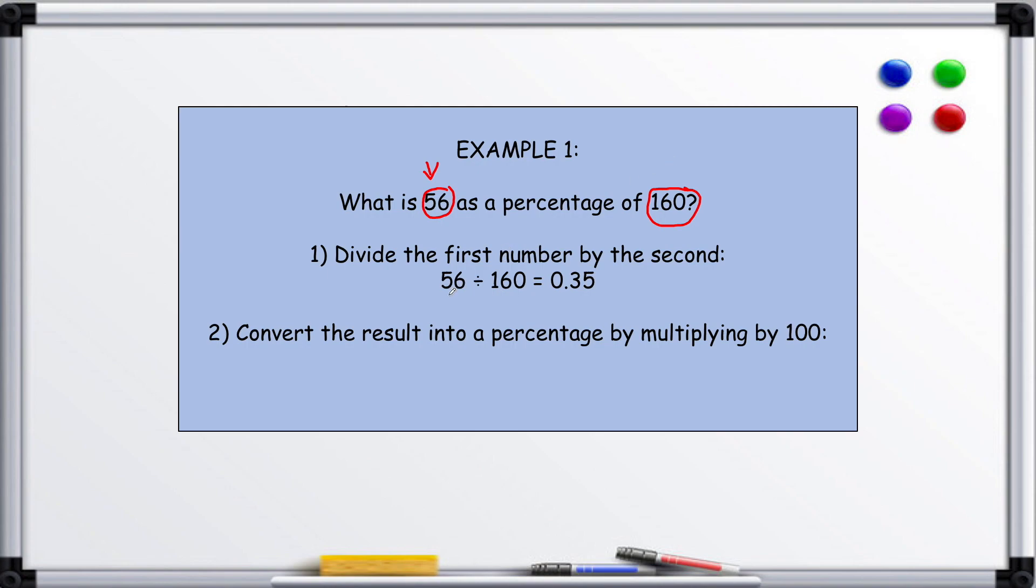So here we go: divide the first number by the second. We divide 56 by 160 and we get 0.35. Then we convert the result into a percentage by multiplying it by 100, so 0.35 times 100 is 35. So our answer is 35 percent.